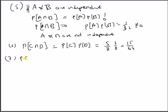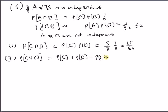Next is probability of C∪D — the union of two independent events. This equals probability of C plus probability of D minus probability of C times probability of D, since C and D are independent so the probability of intersection equals the product of probabilities. So this is 5/8 plus 3/8 minus 15/64, which equals 49/64.